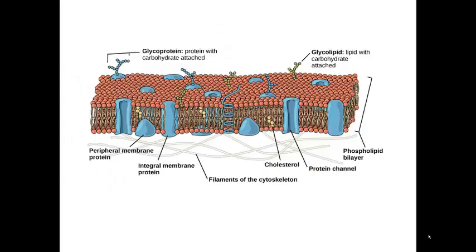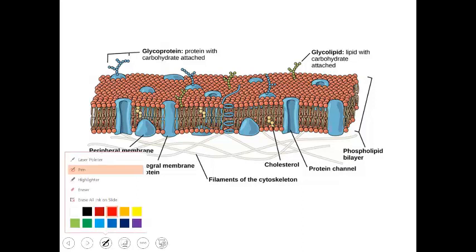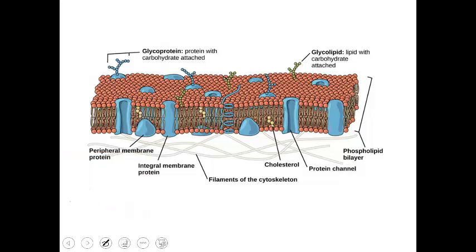Here's an image of the plasma membrane. The plasma membrane is a bilipid layer, and it's made up of phospholipids. All these red beads that you see are the lipid heads. Each one of these lipid molecules has a polar head and two non-polar tails. The heads are hydrophilic, meaning they're water-attracting, and the tails are water-repelling or hydrophobic. So you see the ocean of phospholipid molecules right here.